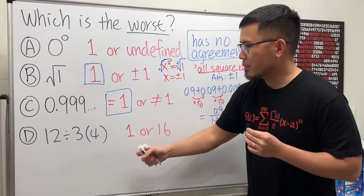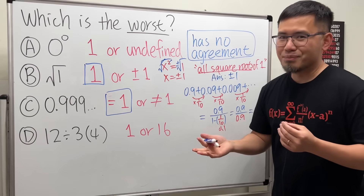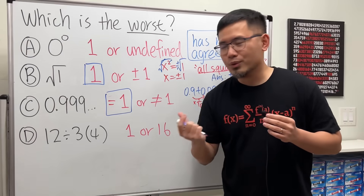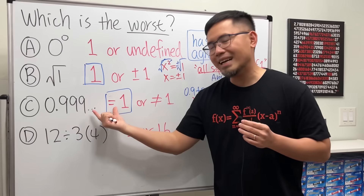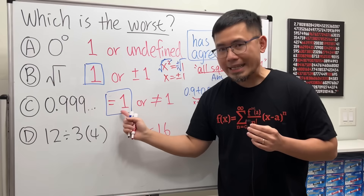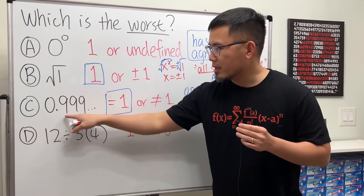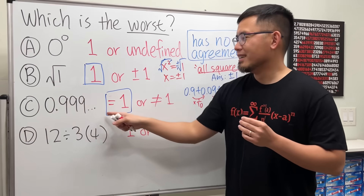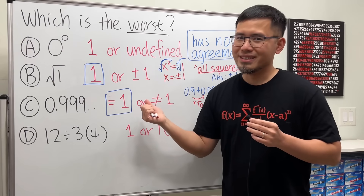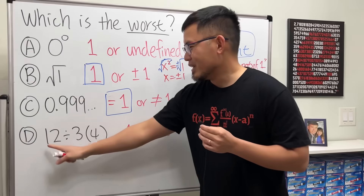This notation represents a geometric series, and the answer is indeed equal to one. Both 0.999 repeating and 1 are real numbers — they look different but they are equal. Another way to see this: if they were not equal, can you find a number between 0.999 repeating and 1? You can't, so they must be equal.